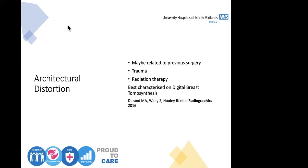Another mammographic feature is architectural distortion — it looks like a star. We need to be careful because it might be related to previous surgery, such as breast reduction or lump removal. Trauma — an accident, or something hitting the breast — could also cause architectural distortion. The challenge is distinguishing that from cancer. Radiation therapy may also cause architectural distortion. Breast digital tomosynthesis, because you see the breast in slices similar to CT, makes distortion easier to see and scrutinize.